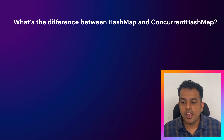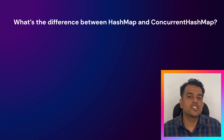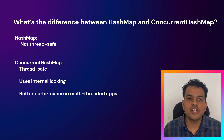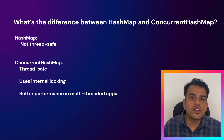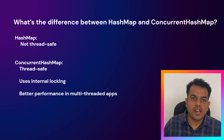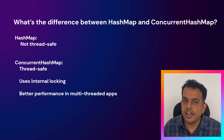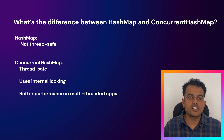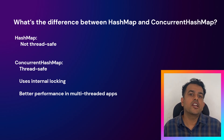Next was a Java question: what is the difference between HashMap and ConcurrentHashMap? HashMap is not thread-safe — if multiple threads modify it, you may get inconsistent data. ConcurrentHashMap is thread-safe; it allows concurrent reads and controlled writes. It doesn't block the entire map — it locks only specific segments internally, so it performs better in multi-threaded environments.